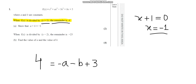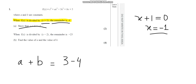We have 4 equal to minus a minus b plus 3. The question says to show that a plus b equals minus 1, and a and b are positive here. So I'll move them to the other side of the equation, bringing the common terms together. That gives a plus b equal to 3 minus 4, and 3 minus 4 equals minus 1. We have clearly shown that a plus b equals minus 1, which is 2 marks.